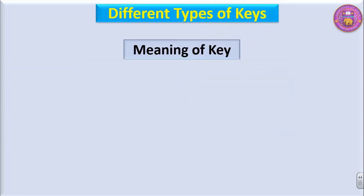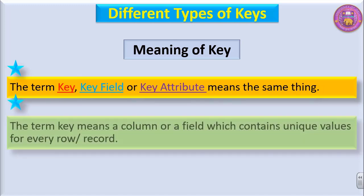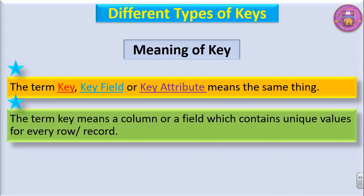First of all, the meaning of key. The term key, key field, or key attribute means the same thing. The term key means a column or a field which contains unique values for every row or record.